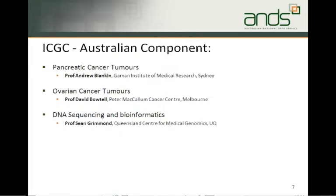Back to the Australian component. There are two groups responsible for sourcing the tumours. The pancreatic cancers are coming from Sydney, from the Garvan Institute of Medical Research — Professor Andrew Biankin is responsible for that, very much a clinician also doing biology research. The ovarian cancer tumours are coming from Melbourne, from the Peter Mac Cancer Centre, with Professor David Bowtell responsible. The other important part of the Australian component is doing the DNA sequencing and performing bioinformatics — Professor Sean Grimmond at the Queensland Centre for Medical Genomics at the University of Queensland in Brisbane was responsible for that.